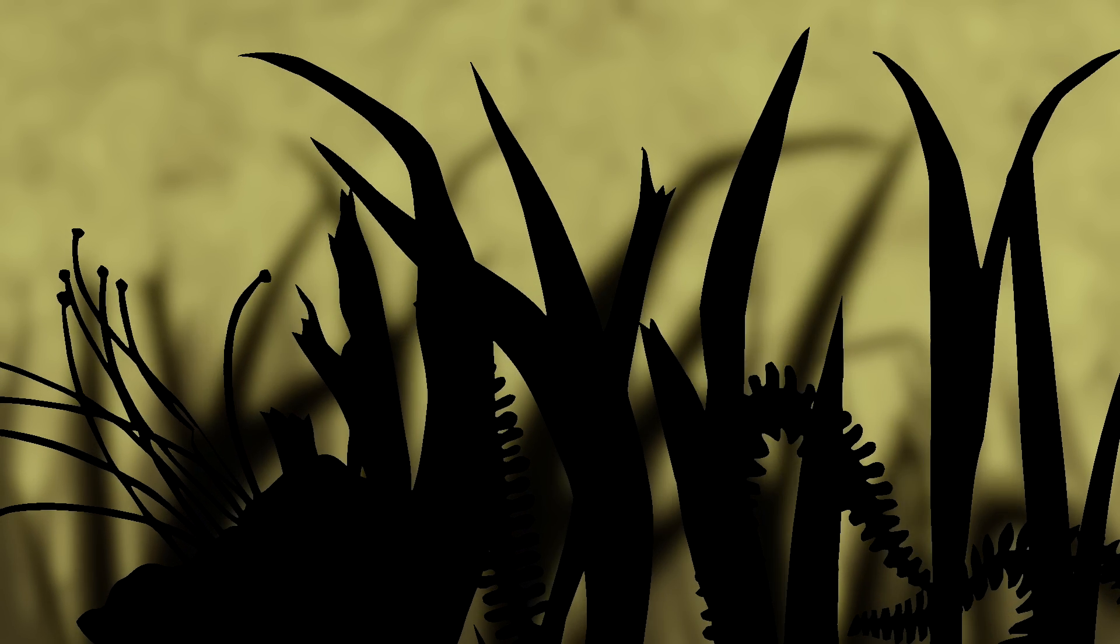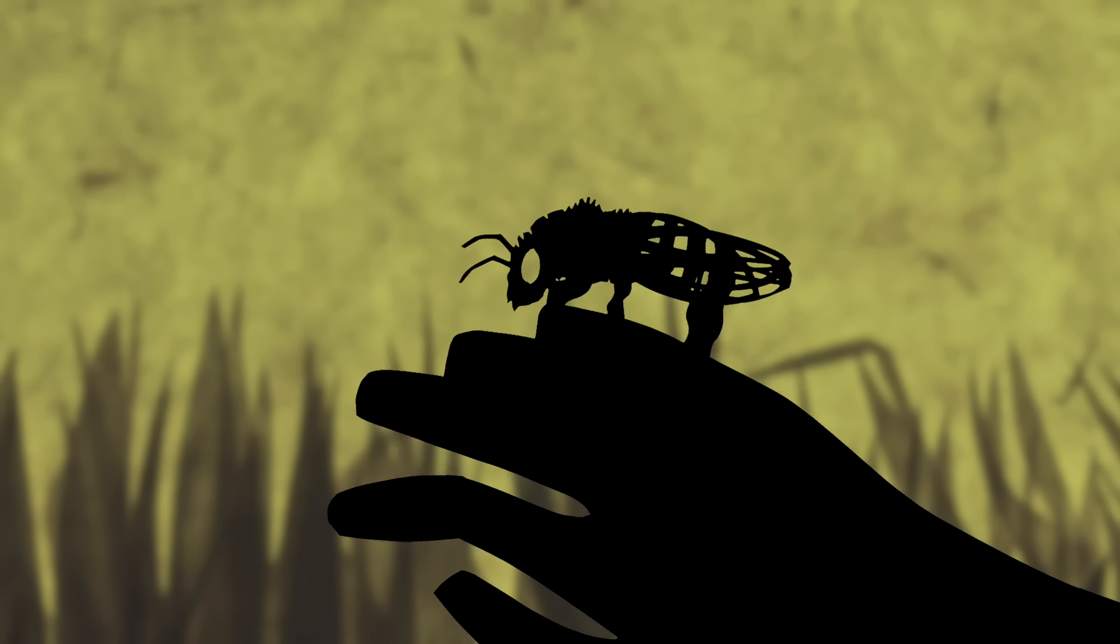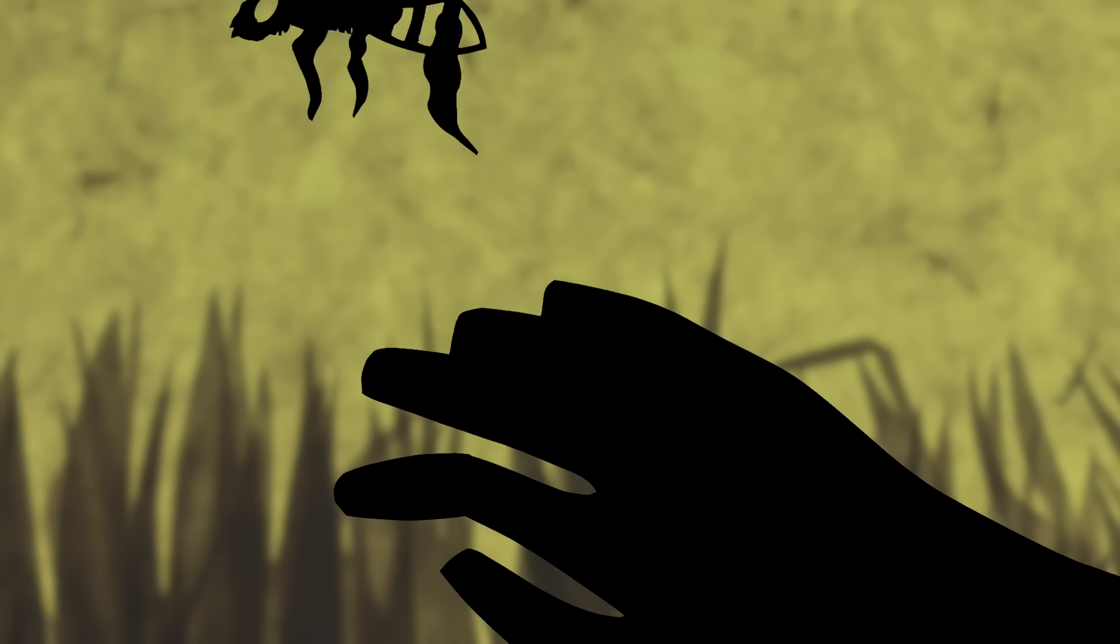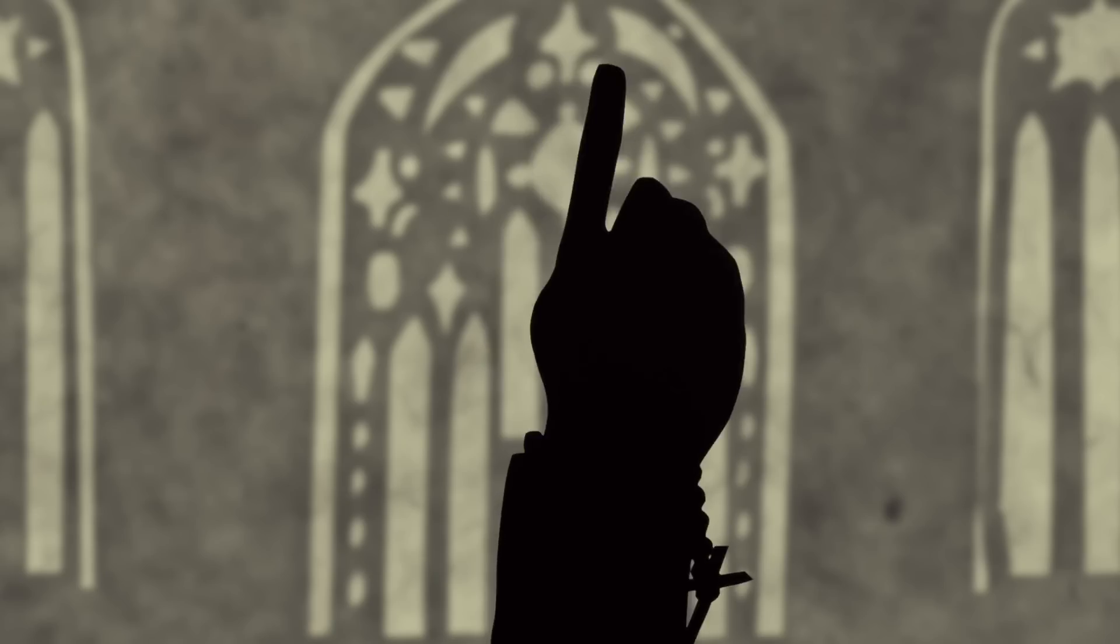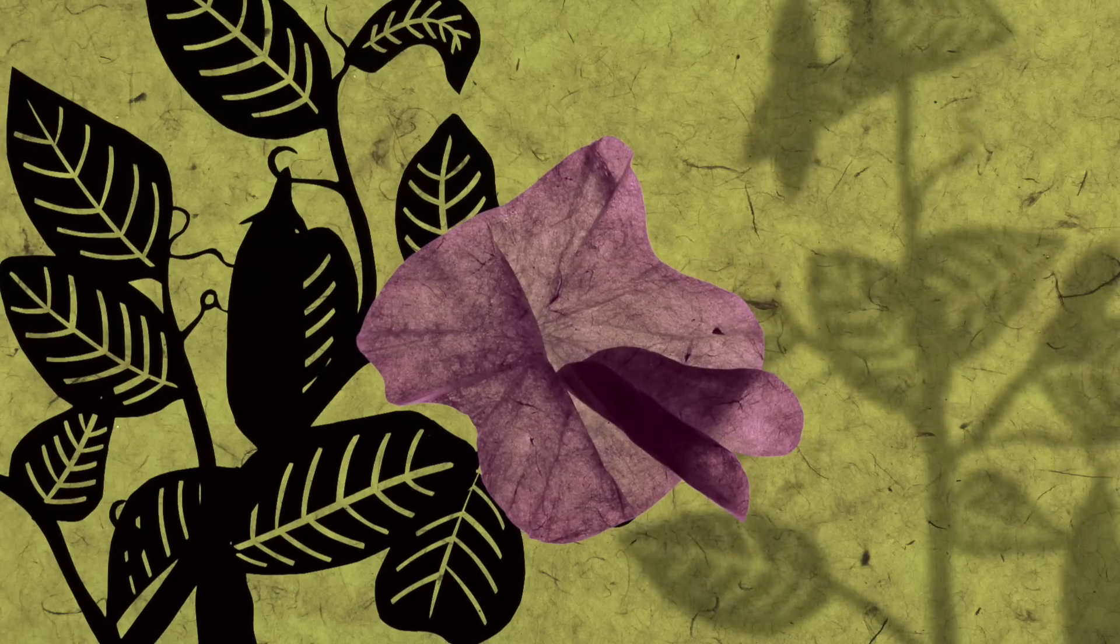Mendel wondered how traits were passed down through generations. To find out, he needed to perform breeding experiments. After failed trials with bees and mice, he settled on the innocuous pea plant as his study organism.